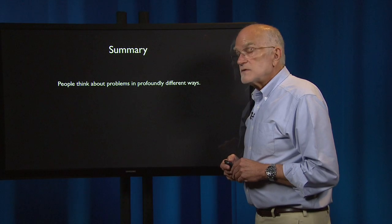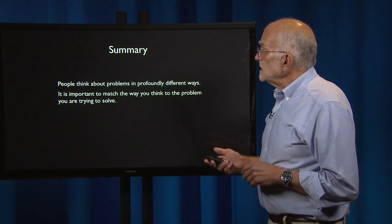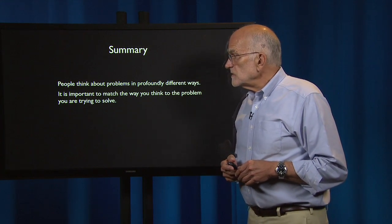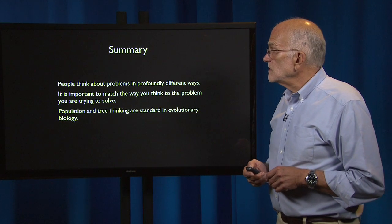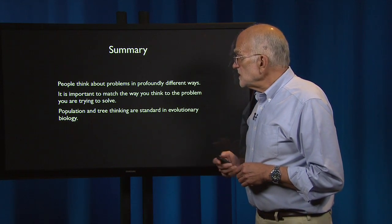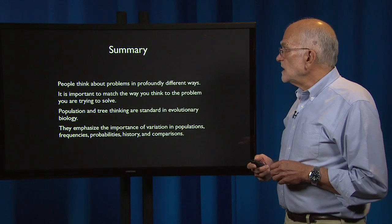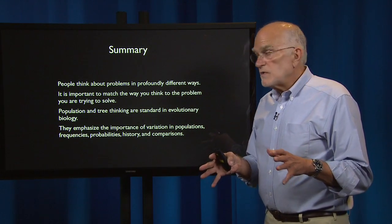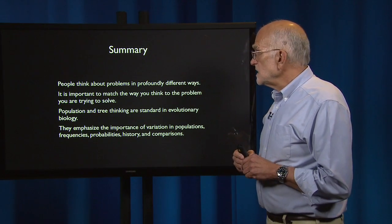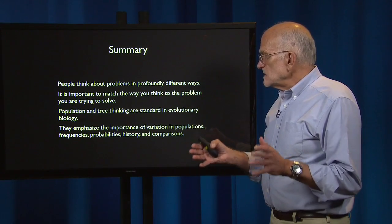To summarize: people think about problems in profoundly different ways, and it is important to match the way you think to the problem you are trying to solve. Population and tree thinking are standard in evolutionary biology. They emphasize the importance of variation in populations, frequencies, probabilities, history, and comparisons.